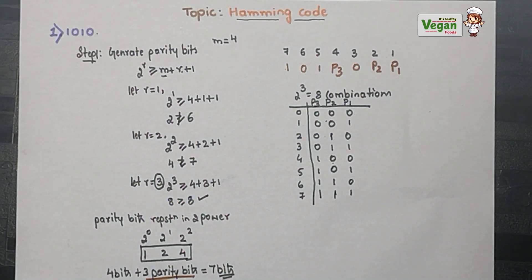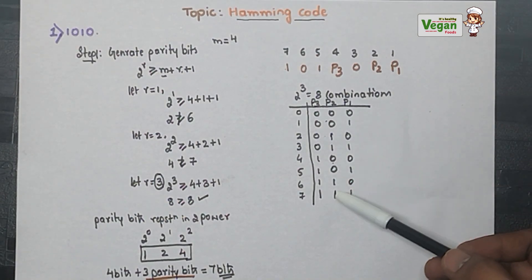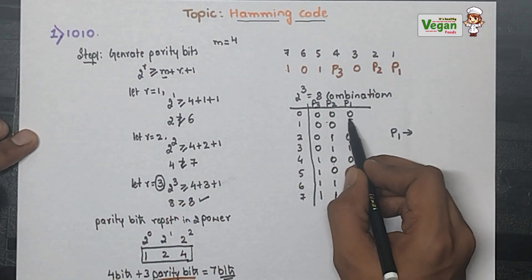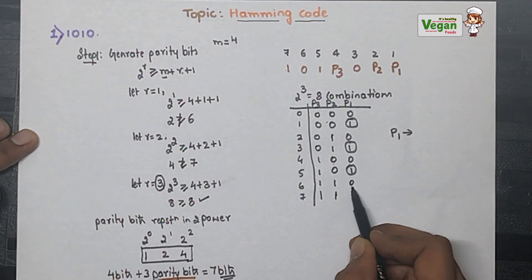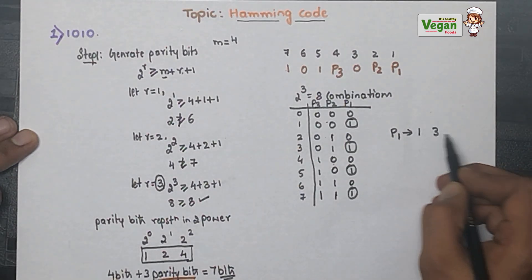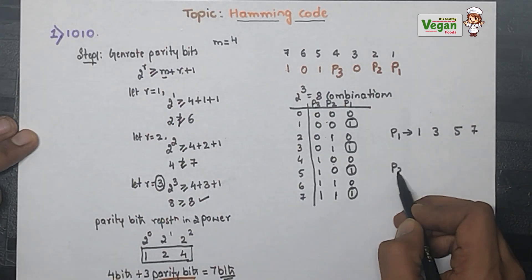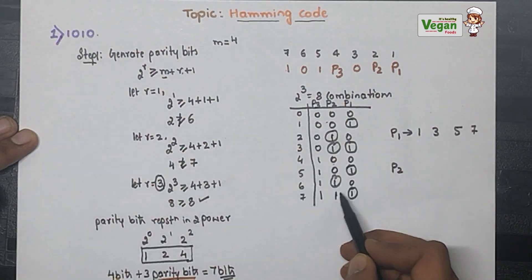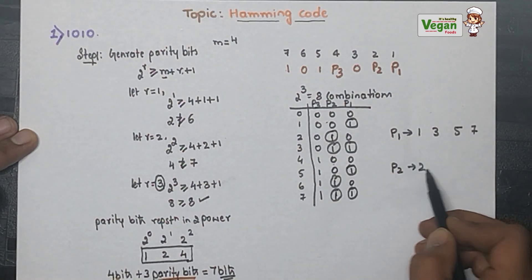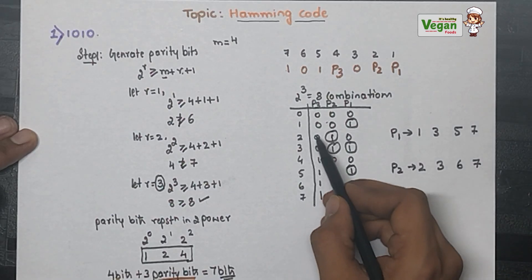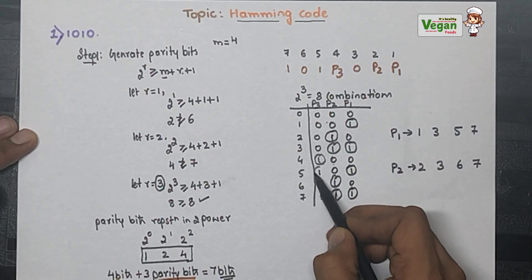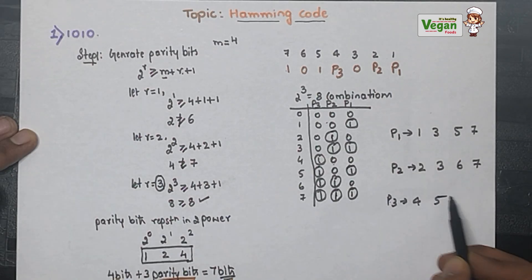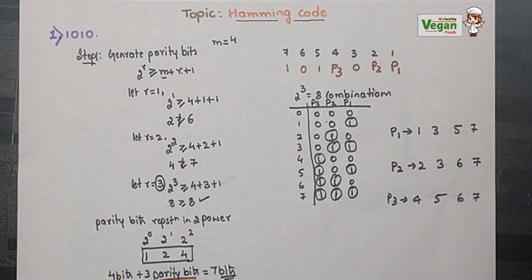From the combinations, p1 covers positions 1, 3, 5, 7; p2 covers positions 2, 3, 6, 7; and p3 covers positions 4, 5, 6, 7.